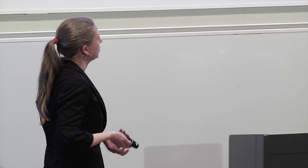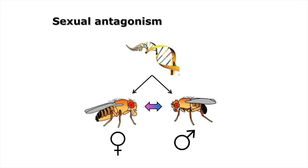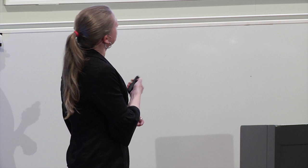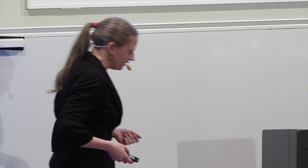I work on something called sexual antagonism, which is about how having a shared genome but two different sexes that experience potentially conflicting selection pressures can lead to maintenance of genetic variation. We can imagine that males need to be a certain way and females need to be another way, so a given allele with the same effect in both sexes will be selected differently depending on which sex it finds itself in.